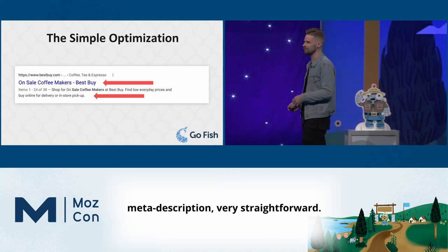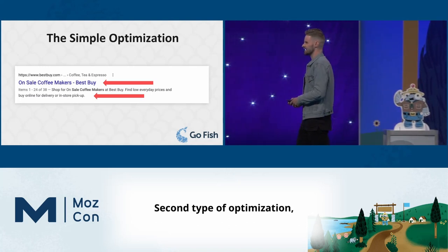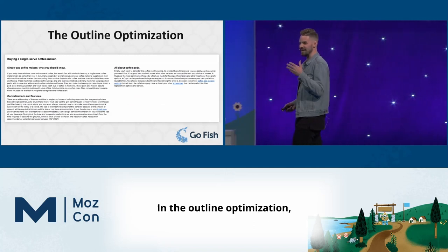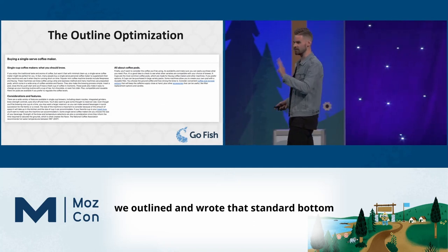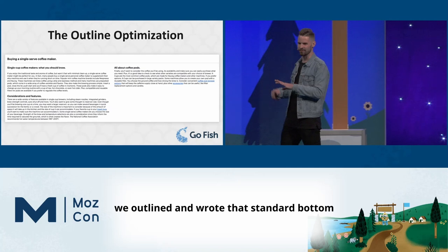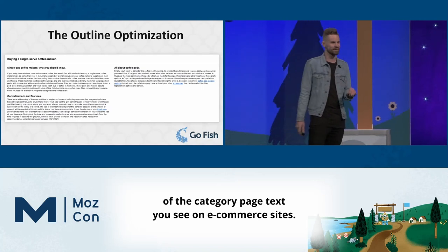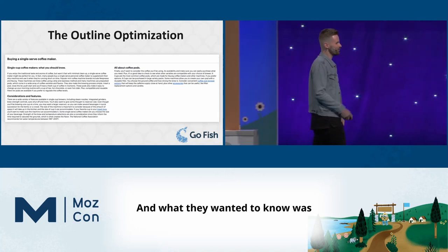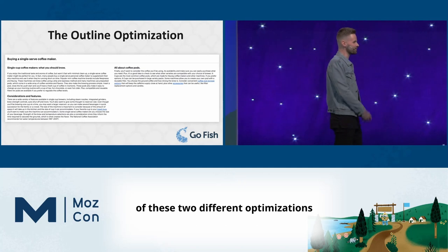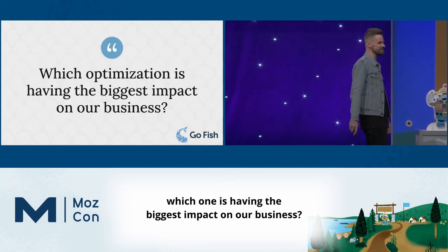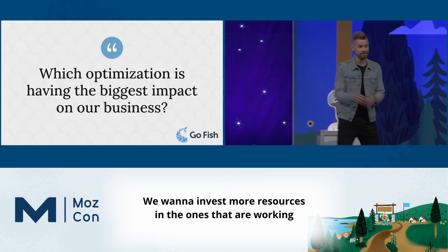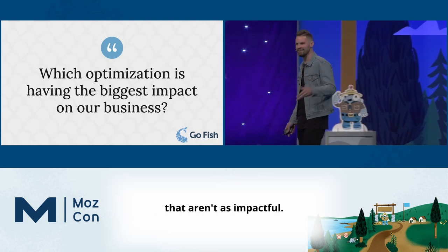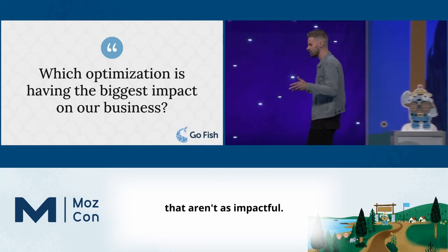In the outline optimization, we outlined and wrote that standard bottom-of-category-page text you see on e-commerce sites. What they wanted to know was: of these two different optimizations, which one is having the biggest impact on the business? They wanted to invest more resources in the ones that are working and divest from the ones that aren't as impactful.